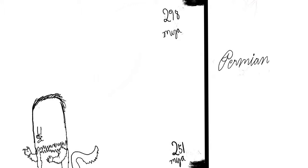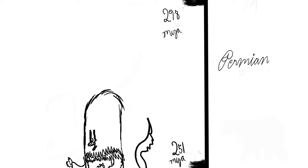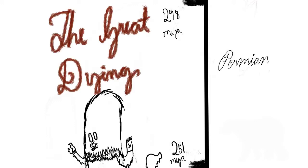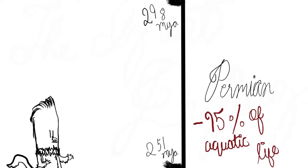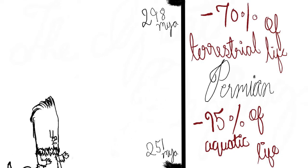By far the most significant thing about the Permian period is the largest mass extinction in the history of the planet. This mass extinction killed 95% of aquatic life and 75% of organisms on land. This was devastating and life took millions of years to recover. But, as Dr. Ian Malcolm has always said: 'Life, uh, finds a way.'